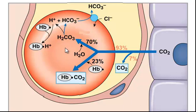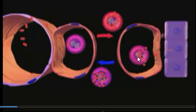This red blood cell will now transport and deliver the carbon dioxide all the way back to the lungs. The red blood cell, which has undergone these reactions, will travel to the heart, and from the heart it will go to the lungs.